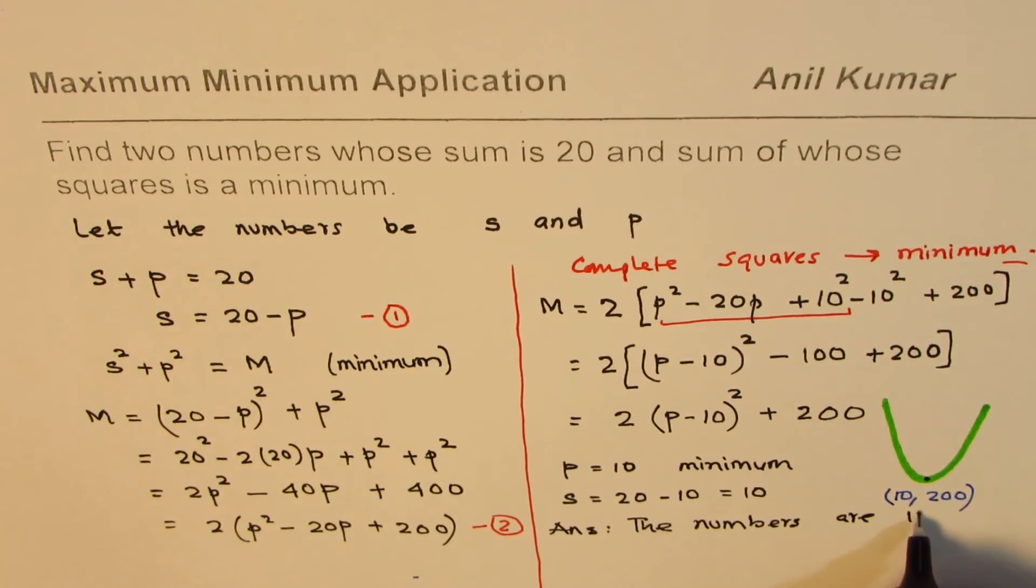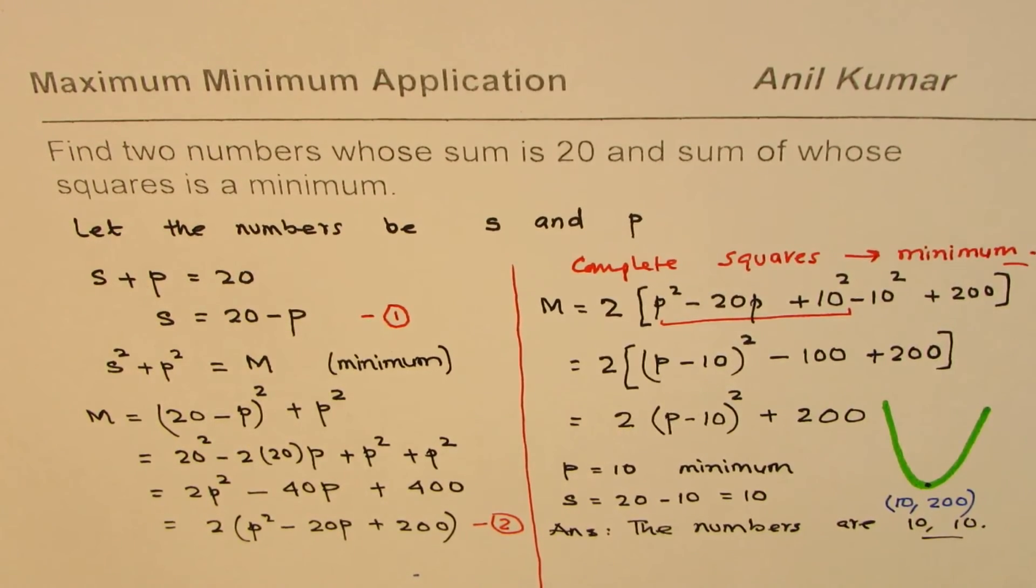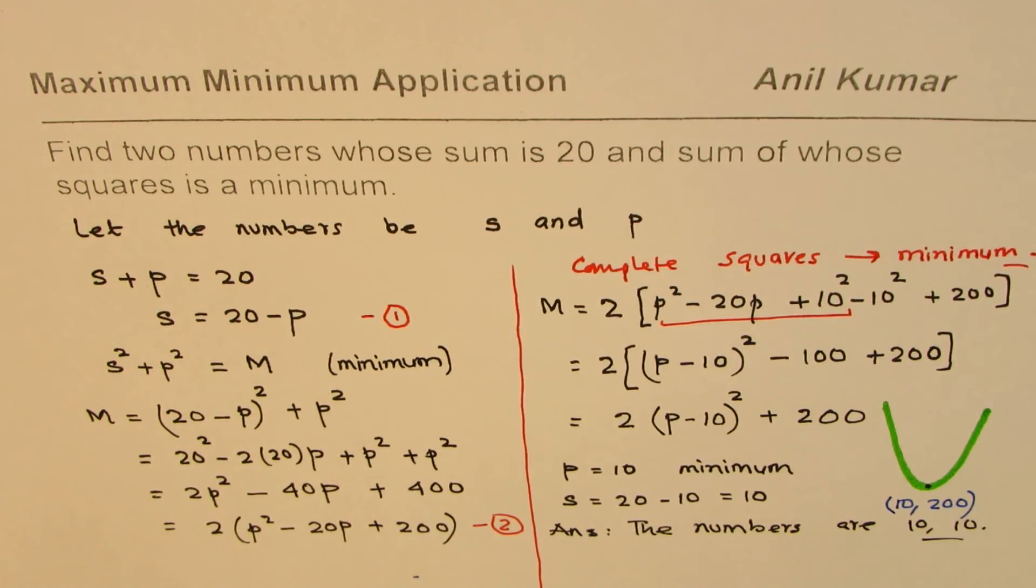The numbers are 10 and 10. You'll find 10 plus 10 is 20, and sum of their squares is also minimum. I hope that helps. Thank you and all the best.